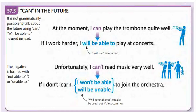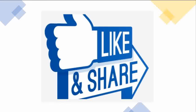The negative for future ability is formed with 'won't be able to' or 'will be unable to.' For example: 'Unfortunately I can't read music very well. If I don't learn, I won't be able to join the orchestra.' It is very unlikely that people say 'I will be unable to join the orchestra' — 'will be unable to' can also be used but it is less common.